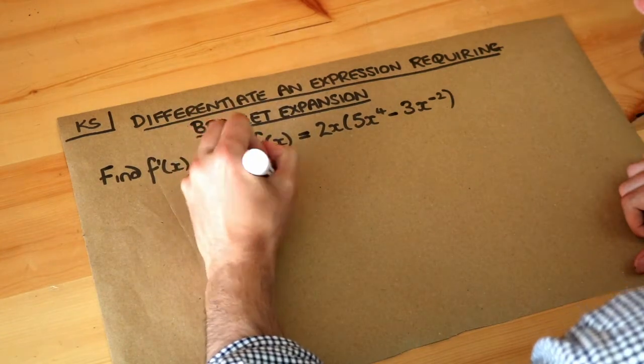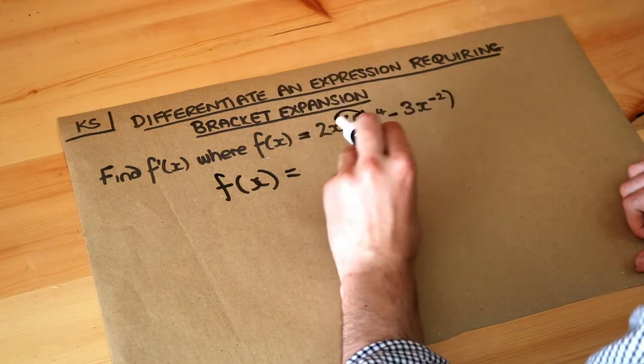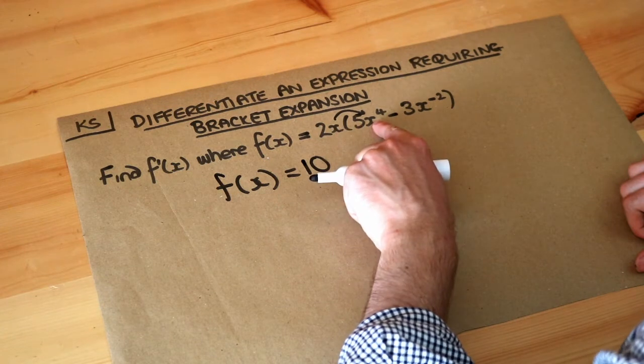So let's do that. f(x) is equal to—we do the 2x times the 5x^4. 2 times 5 is 10, and then using laws of indices, x^1 times x^4 is x^5.